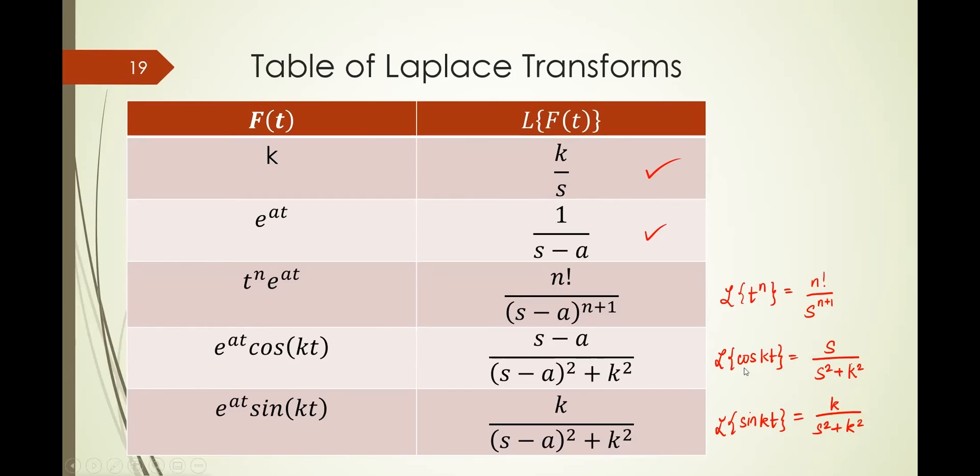It becomes an s minus a. So in here, for cosine kt, there's no problem. But then the cosine kt is beside an e to the at. So that means for every letter s, it becomes an s minus a. It shifts. So the sine kt, ang s niya, nasa ilalim lang. So that's the only one affected by the a. Okay.